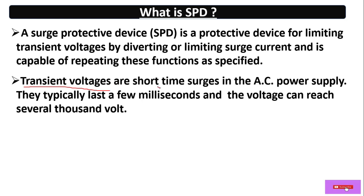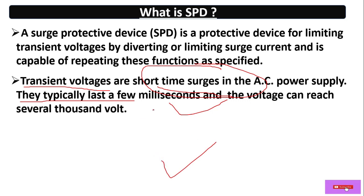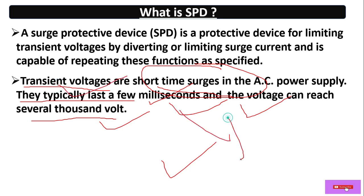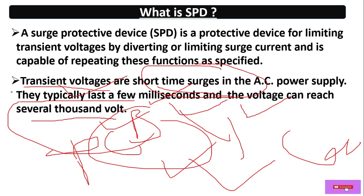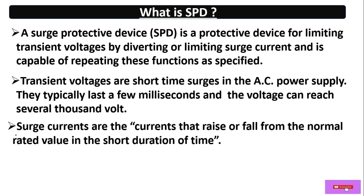Transient voltage is a short-time surge in the AC power supply. It typically lasts for only a few milliseconds. During those few milliseconds, this voltage can reach up to thousands of volts or even more. That's why this voltage can damage our equipment — even sensitive loads like PCB-operated machines. All PCBs can be damaged due to transient voltage and surge current.